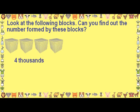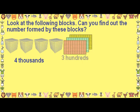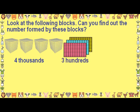Each block in the shape of a cube has 1000 boxes. The 4 blocks on the left contain 4000 boxes. The next 3 rectangular tables contain 100 boxes each. So the 3 tables have 300 boxes.